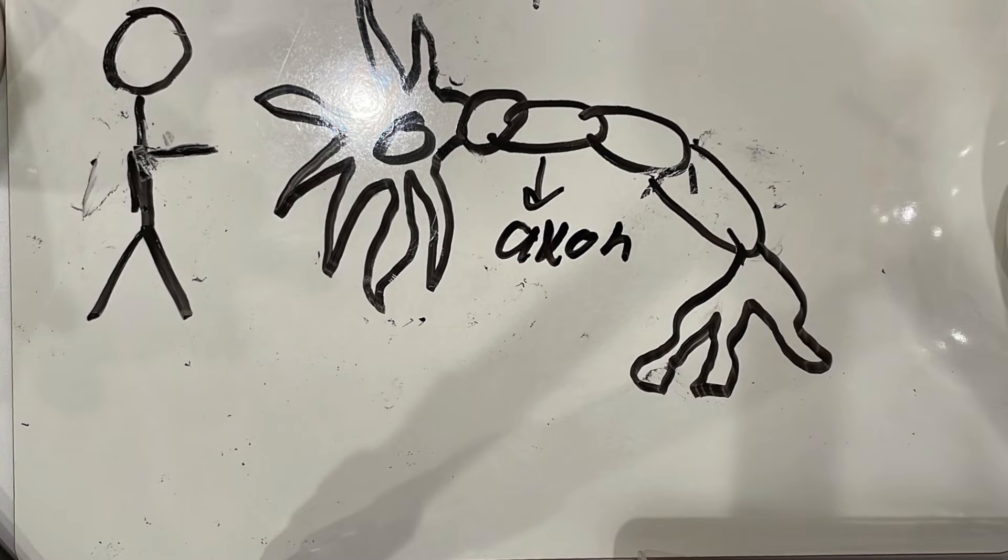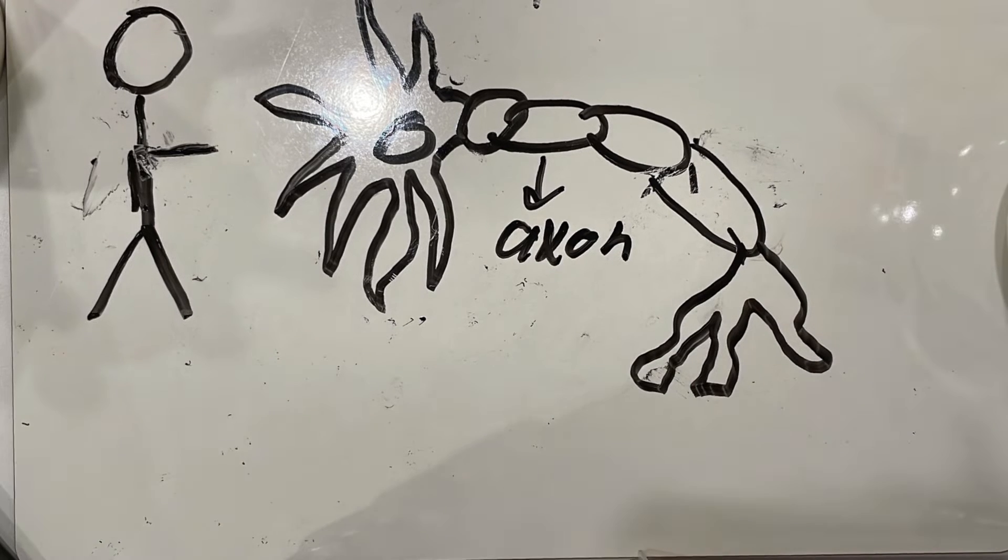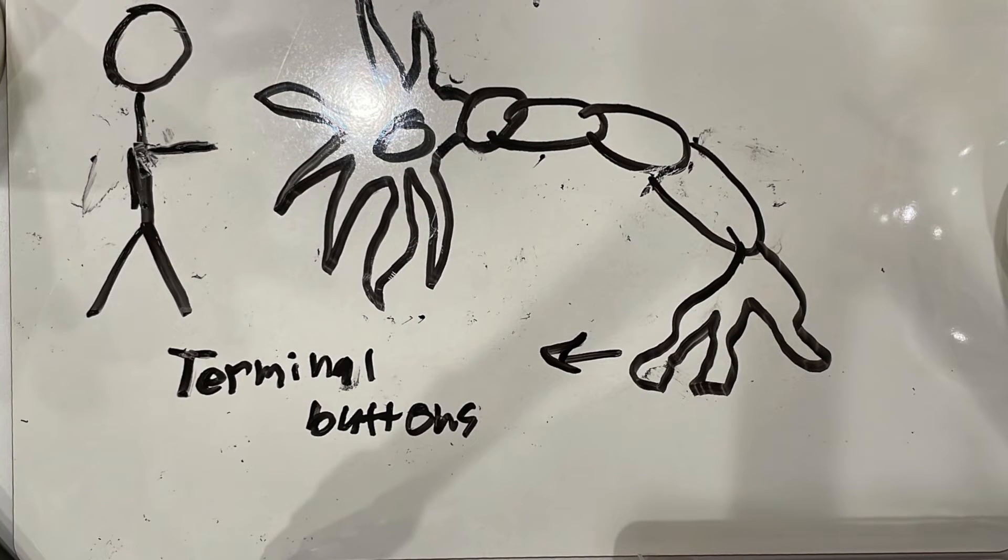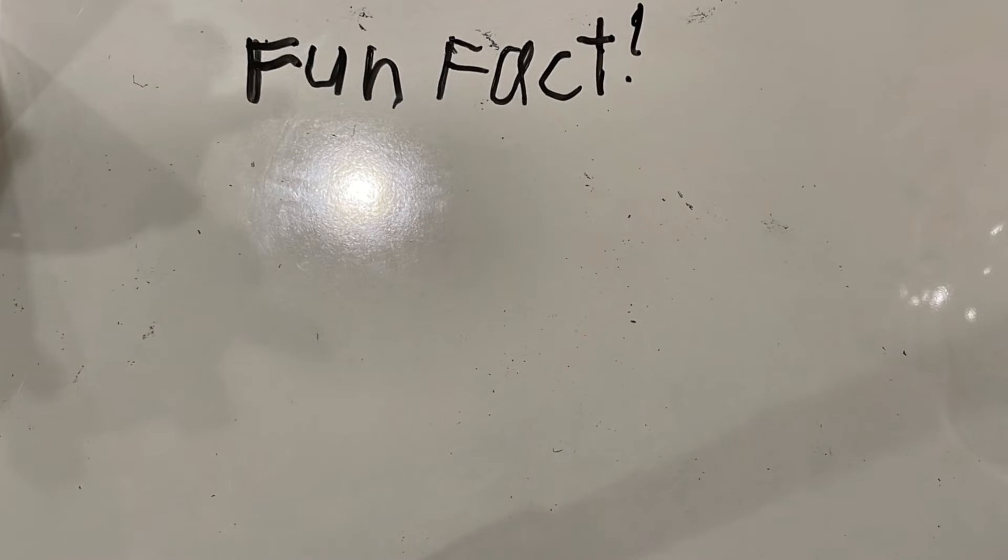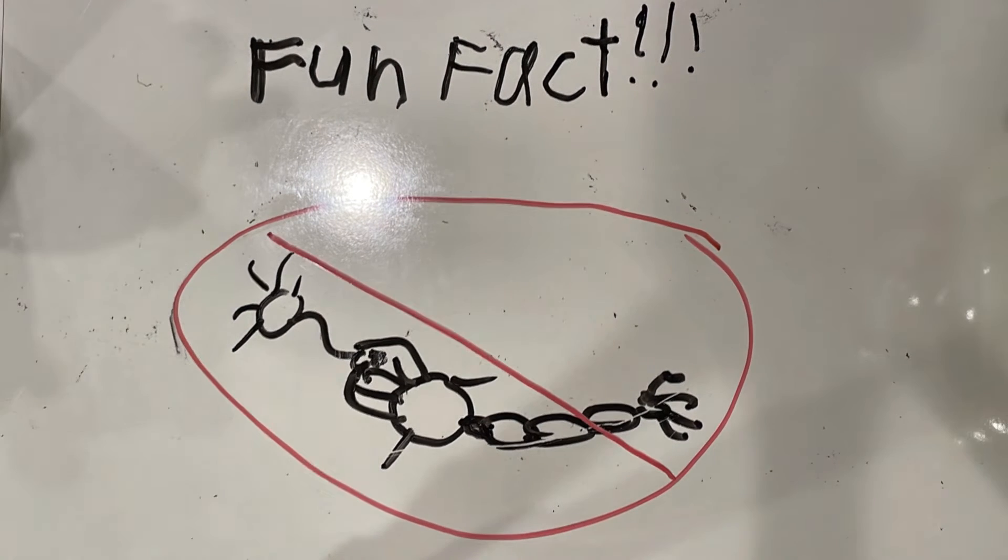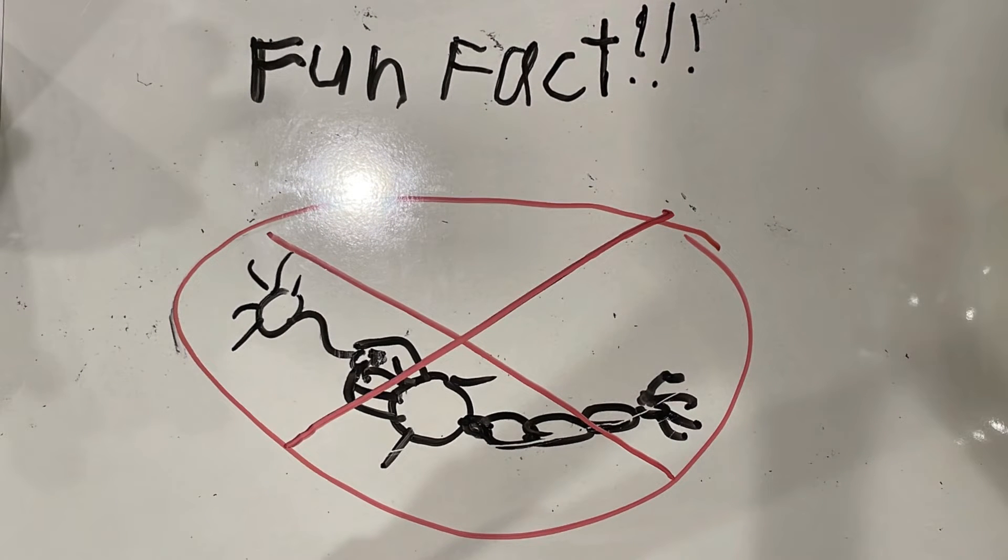The tube coming out of the soma is called the axon. The action potential travels down the axon to the terminal buttons where the neurotransmitters are then relayed to different neurons. Fun fact! Did you know neurons are never touching? For neurotransmitters to get relayed to another neuron, they have to travel through the synapse.